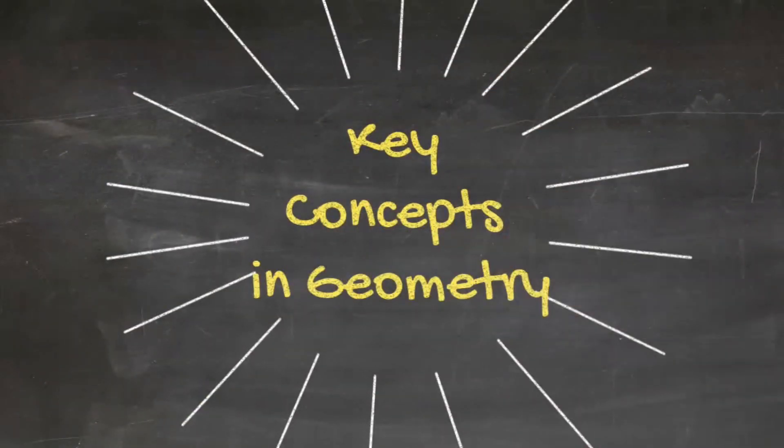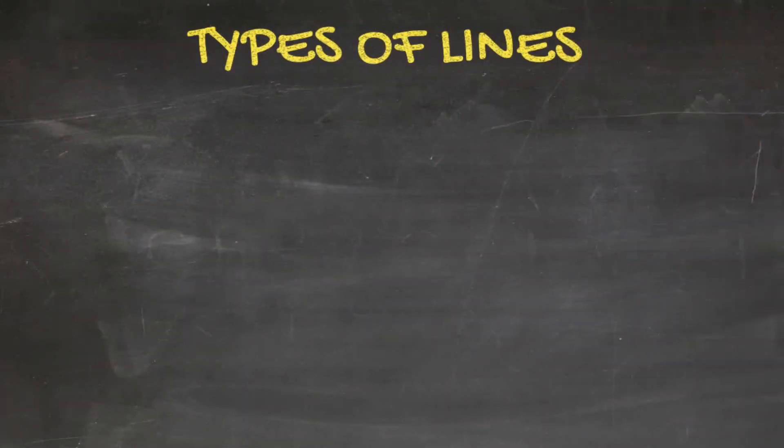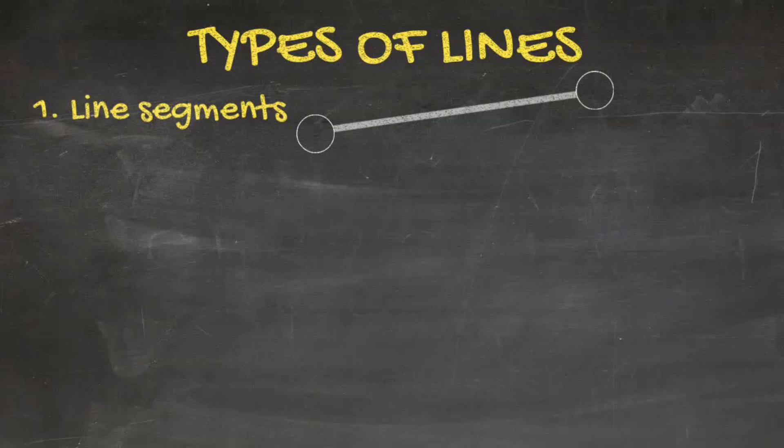To understand Geometry and its applications, let's discuss some of the key concepts and terms in Geometry. To begin with, let's discuss the types of lines. First, we will discuss line segments. Line segments are lines connecting two points. The two points are called endpoints.